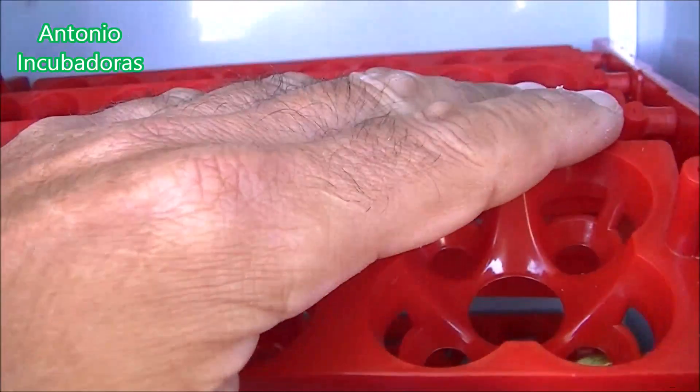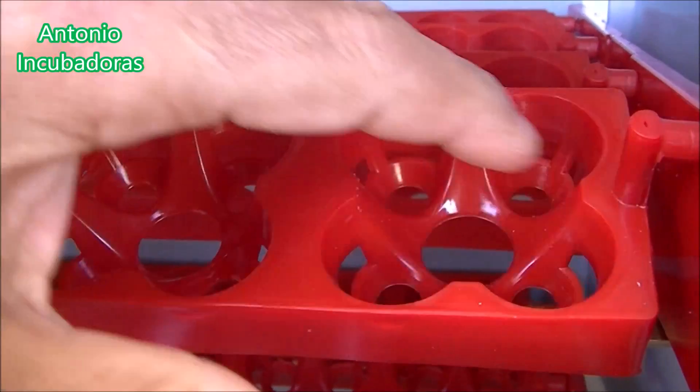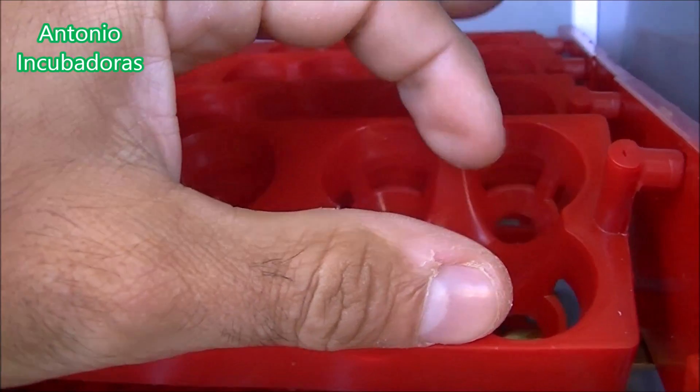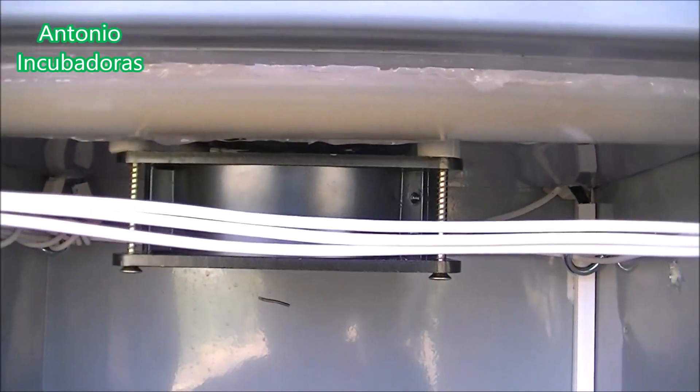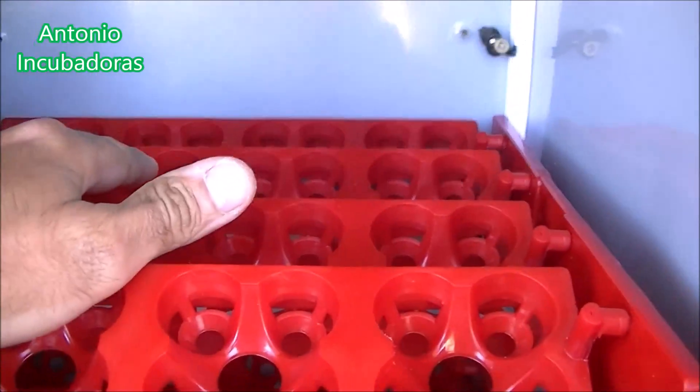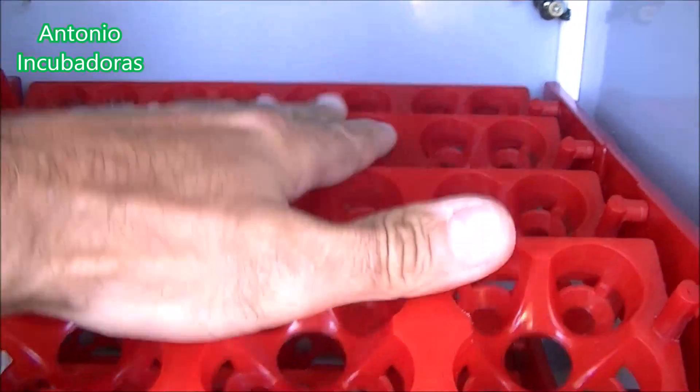Hay veces que las bandejas las hacemos de madera, totalmente cerrada y solo con un hueco, lo justo para que el huevo encaje. ¿Qué conseguimos con eso? Conseguimos que hacemos una incubadora con una primera bandeja muy buena, totalmente cerrada, con un montón de huevos y aquí esta bandeja se van a producir muchos nacimientos porque todo es ideal.